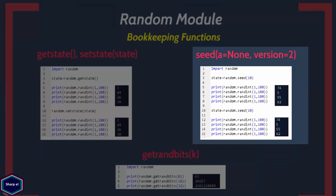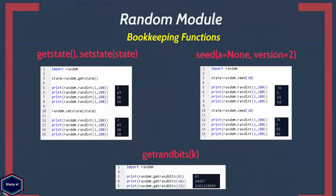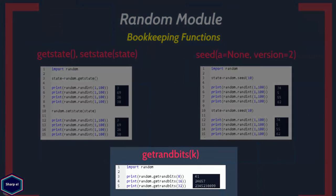If the version is set to integer value 2, which is the default, and if argument a is not an integer, then the seed() function converts string, bytes, or byte array objects to an integer and all of its bits are used. The getrandbits() function is very simple and it returns an integer with k random bits, as shown in the example.